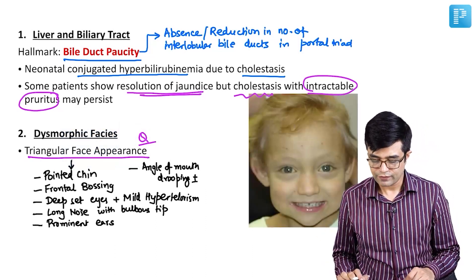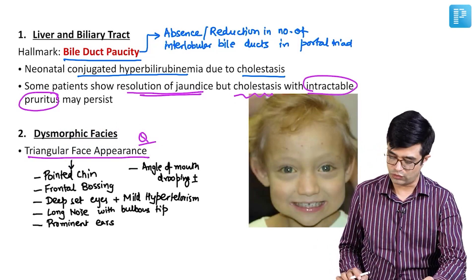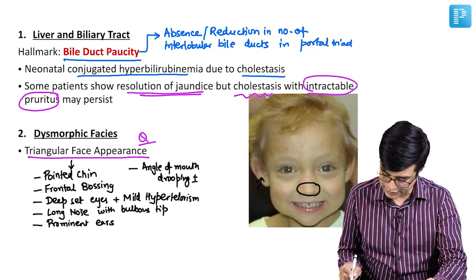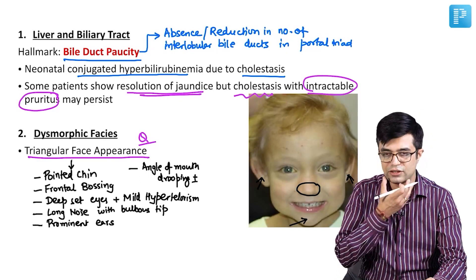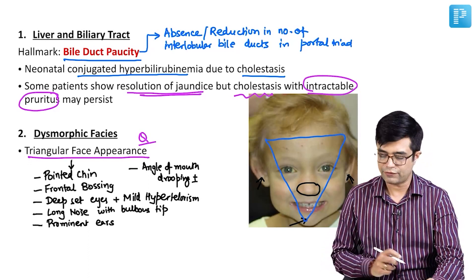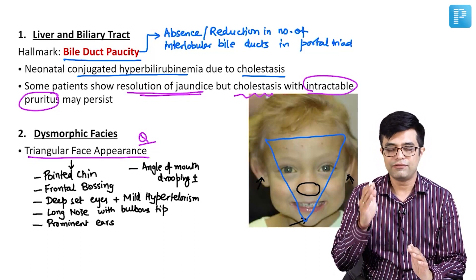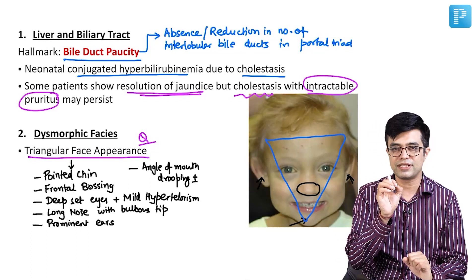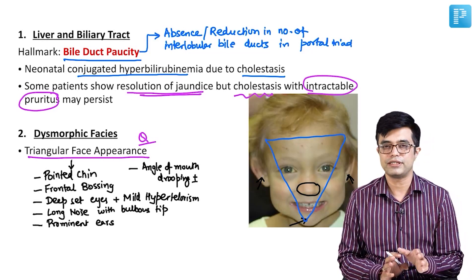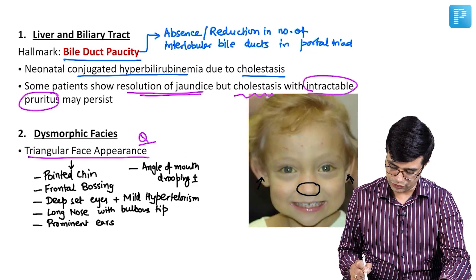This child has a typical triangular face appearance with features of Alagille syndrome. The dysmorphic features visible include a bulbous tip nose, prominent ears, and a prominent pointed chin — together producing the so-called triangular face appearance. These signs are subtle on examination, but in exam visuals they will be classical enough that if you remember these features, you will immediately recognize a triangular face and consider Alagille syndrome.